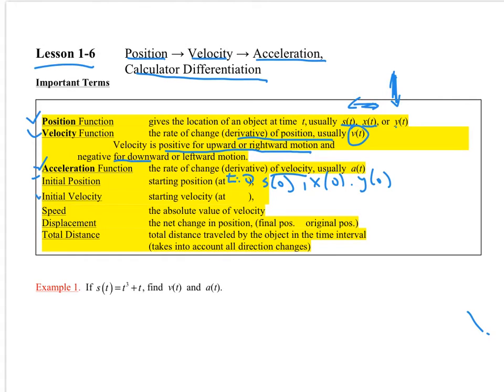All those things would be represented by our initial position. Then initial velocity would also be at T equal to 0, and so that might be V of 0. Initial acceleration you might include as well. Speed, it's the absolute value of the velocity. Velocity gives us a direction, positive or negative.